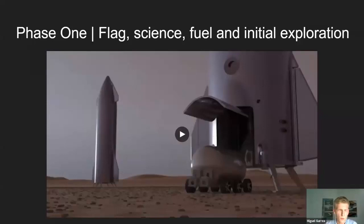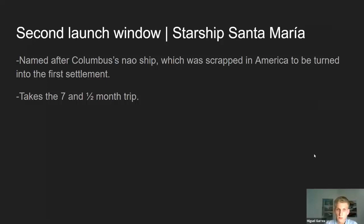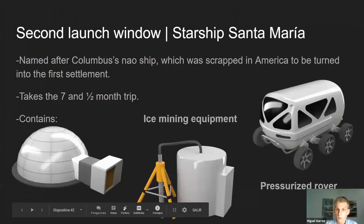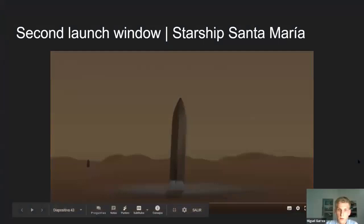The other ship launching in the second launch window is Starship Santa Maria — named after Columbus's ship that was scrapped in America to become the first settlement. This one takes the seven-and-a-half-month trip, arriving one and a half months after the astronauts have landed. It contains the first basic habitat, ice mining equipment, a pressurized rover, and possibly more solar panels.